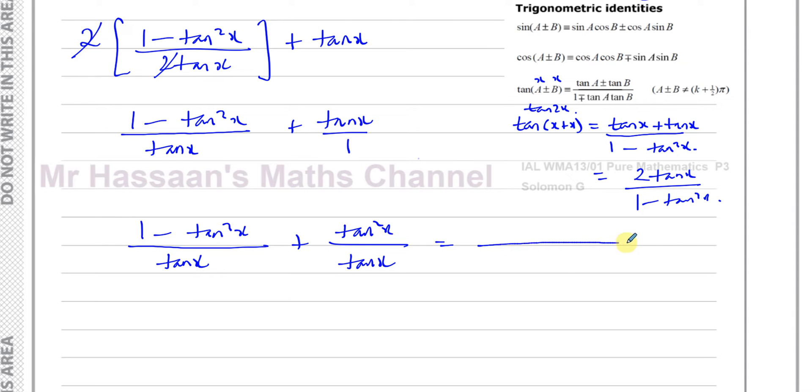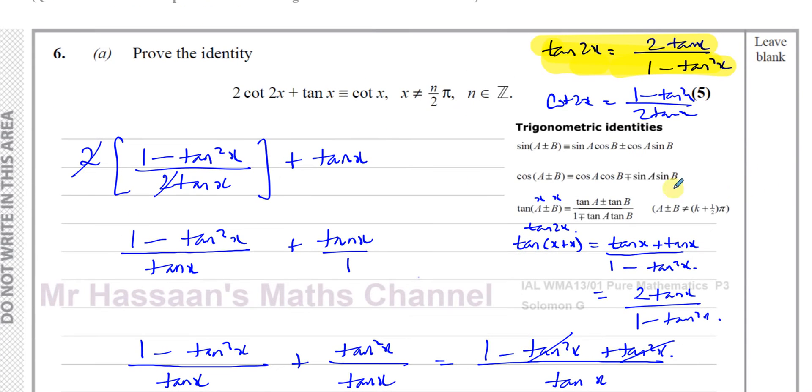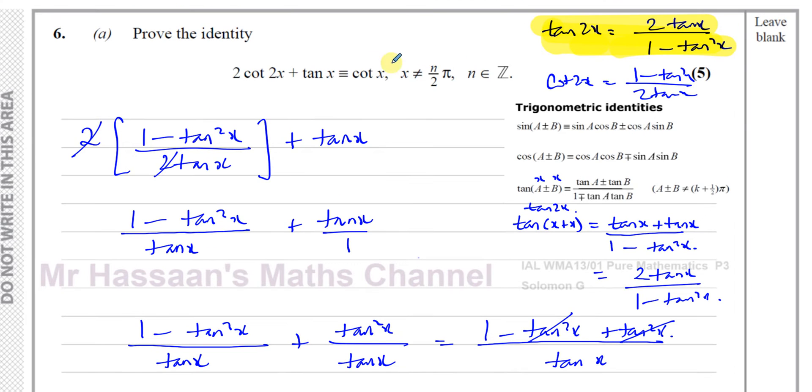Now I can write this as one denominator, which is tan x. And I have 1 minus tan squared x plus tan squared x, and then we can see. The common denominator is tan x. And then I'll end up with here, 1 minus tan squared x plus tan squared x gives you 0. So you've got 1 over tan x, and we know that 1 over tan x is the same as cot x. So we have shown by this manipulation and by using the double angle formula, that this expression gives us cot x.